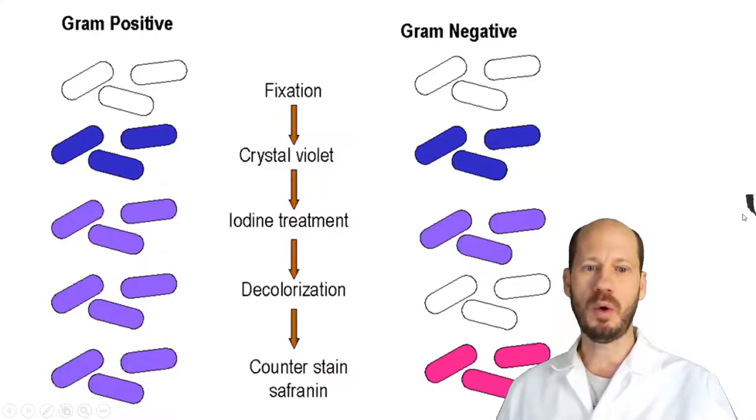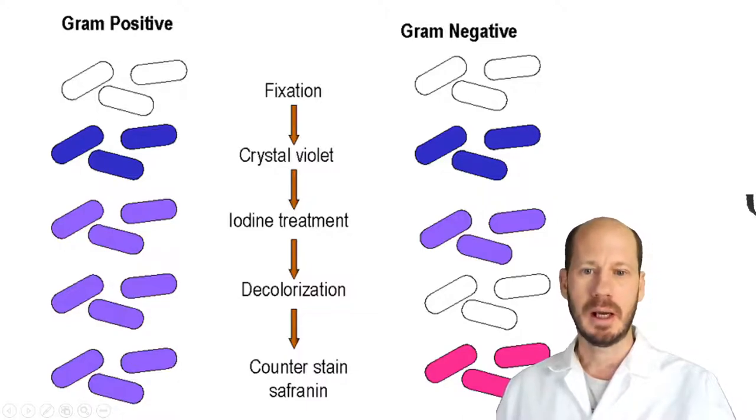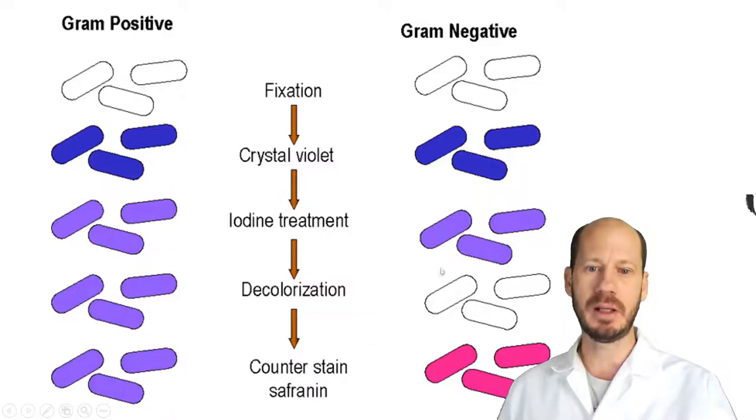And you will go into a decolorization, which is not only done with ethanol, but also can be done with acetone, or there are commercial solutions that are specialized for removing the crystal violet from gram-negative bacteria. The gram-negative in this decolorization will lose the stain from the crystal violet, whereas the gram-positive, because of the thick layer of peptidoglycan, will remain colored by the crystal violet.